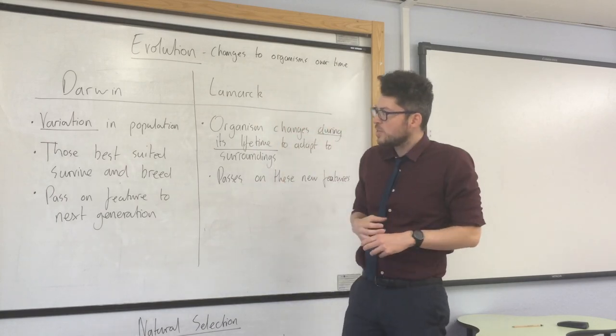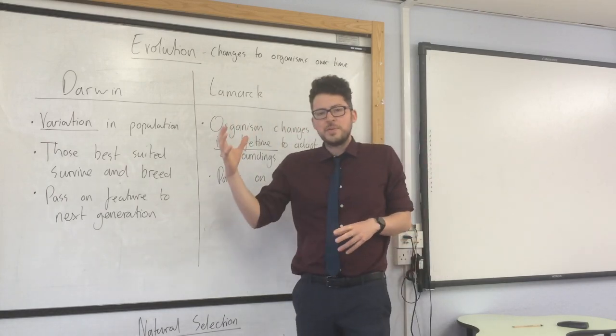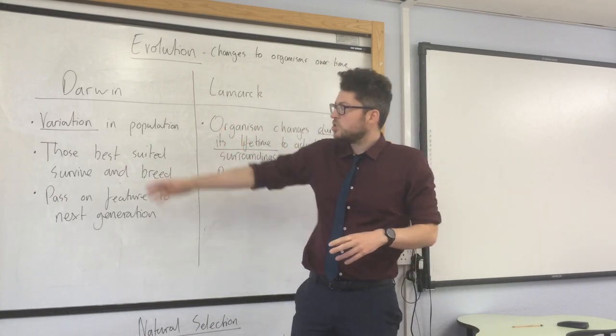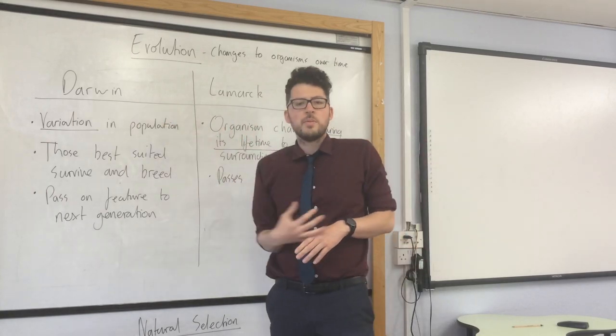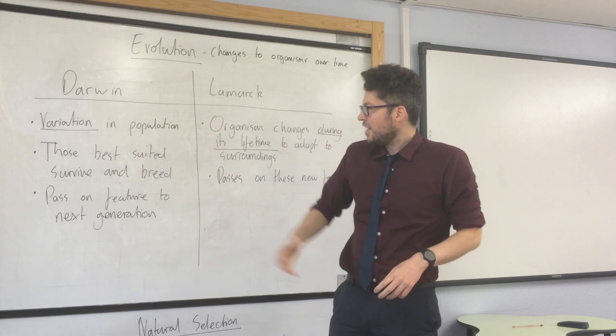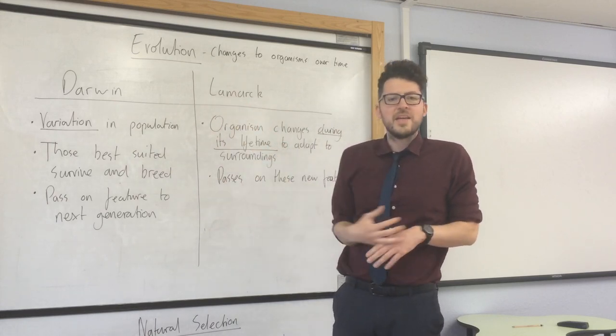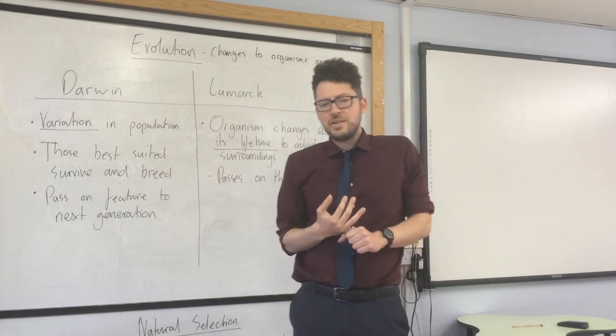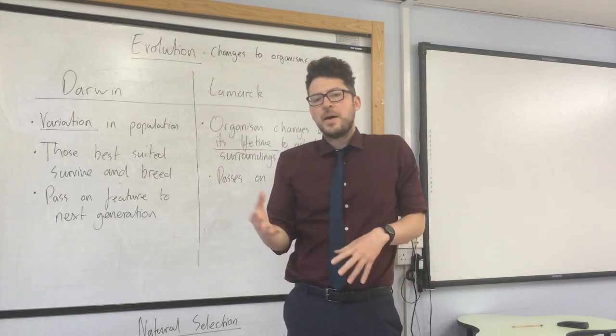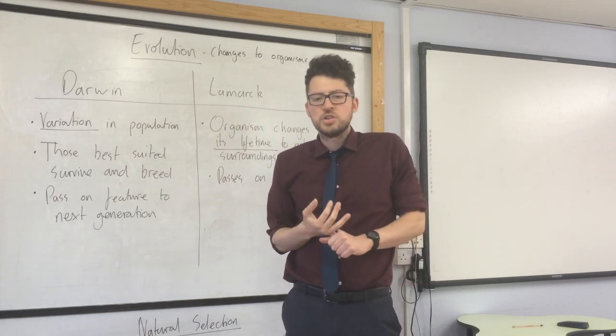Now I'll start off with the two theories. There were two people — one called Charles Darwin, who you've probably heard of, and another man called Lamarck — and they had different theories about how evolution occurred.